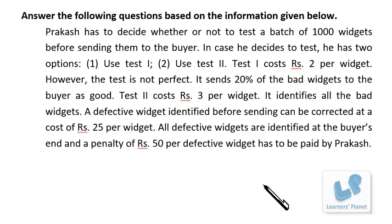Prakash has to decide whether or not to test a batch of 1000 widgets before sending them to the buyer. If he decides to test, he has two options: Test 1 costs rupees 2 per widget but is not perfect — it sends 20% of the bad widgets to the buyer as good. Test 2 costs rupees 3 per widget and identifies all bad widgets. A defective widget identified before sending can be corrected at rupees 25 per widget, and all defective widgets identified at the buyer's end incur a penalty of rupees 50 per defective widget paid by Prakash.